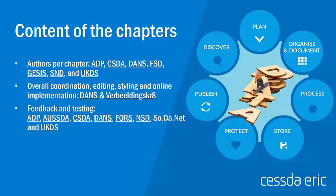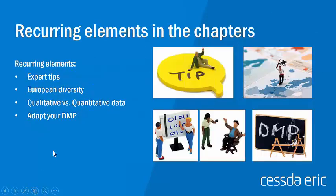The structure we decided upon had several authors per chapter, who are mentioned in the online version so you know who wrote the specific chapters. We also had a pool of people providing feedback and testing the online module in October. There are some elements that reoccur in several chapters. The Adaptive DMP occurs in every chapter — it is really the central theme throughout, because there were a lot of requests around data management planning.